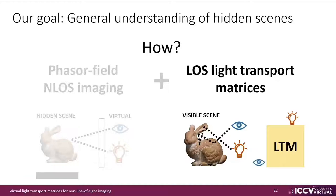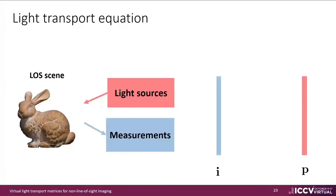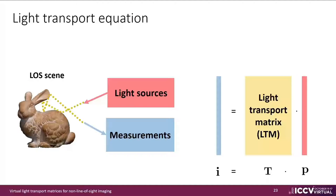With the ability to create virtual cameras and light sources, we propose to compute light transport matrices in hidden scenes to provide general understanding of these. The light transport equation defines the linear relationship between a set of light sources and a set of measurements by means of the light transport matrix. This matrix encodes the global light transport effects of the scene for its light sources and measurements, and is typically unknown.